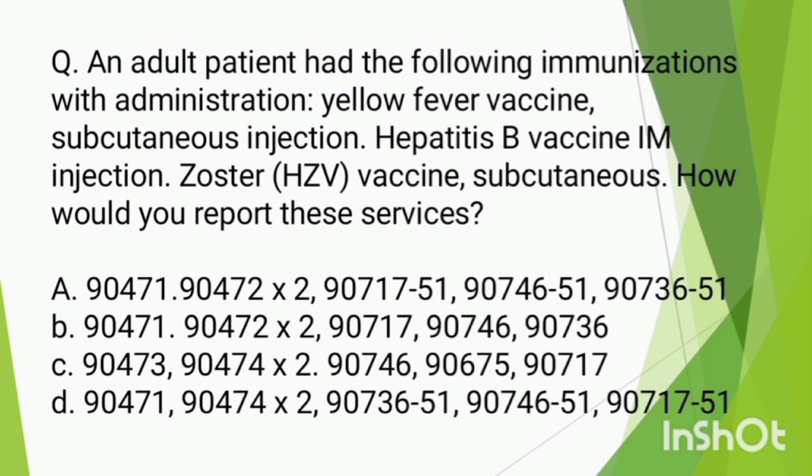There are 51 modifiers and we can eliminate those options. In this case, there are 51 modifiers associated with this vaccine scenario, and we can eliminate those options using the general rule.